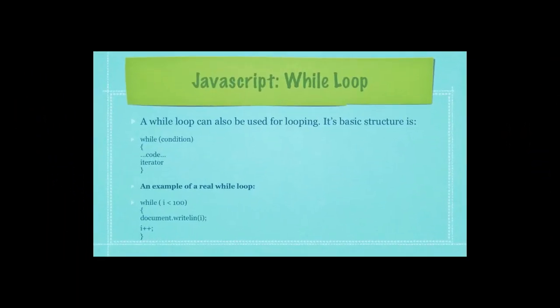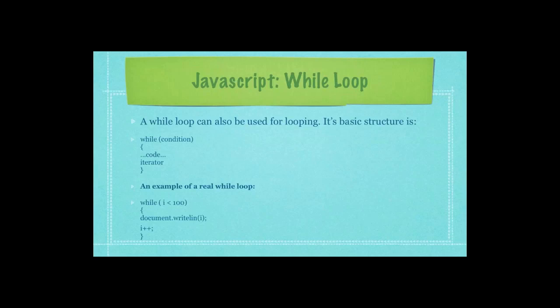We also have while loops. A while loop can also be used for looping. Its basic structure is the keyword while, followed by a condition. Then you have your code. And then finally you have your iterator. Here's a real example. We're going to continue the loop through this while loop until I is either equal to or greater than 100. And you can see just like in the previous for loop, I'm performing the same action, which is to repetitively write the value of I to the screen. You can see the iterator down there as well.